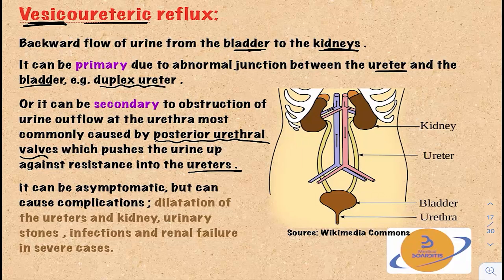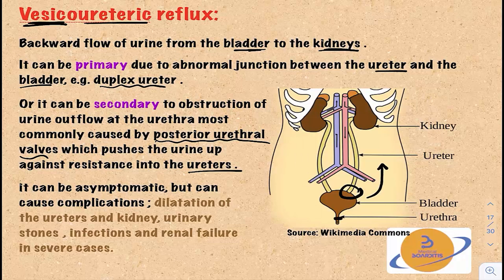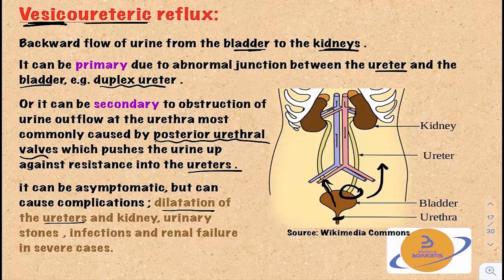Primary cases are caused by abnormal junction between the ureter and the bladder, resulting in backflow of urine into the kidneys. Secondary cases — such as from posterior urethral valves — cause obstruction, leading to backflow of urine through the bladder into the ureters and kidneys. It can be asymptomatic, but can also lead to dilatation of the ureters and kidneys (hydronephrosis), urinary tract infections and stones, and renal failure.